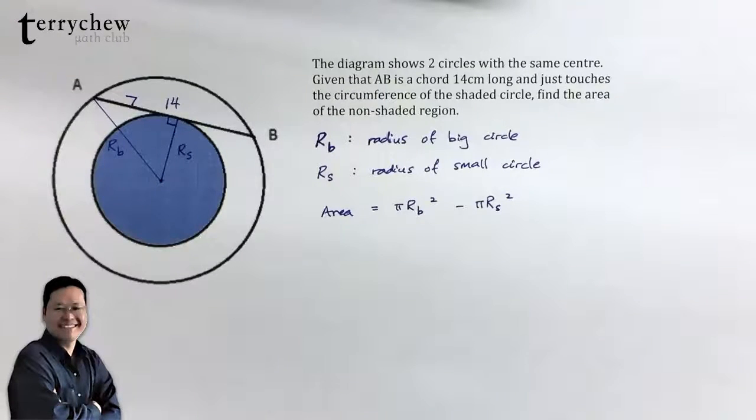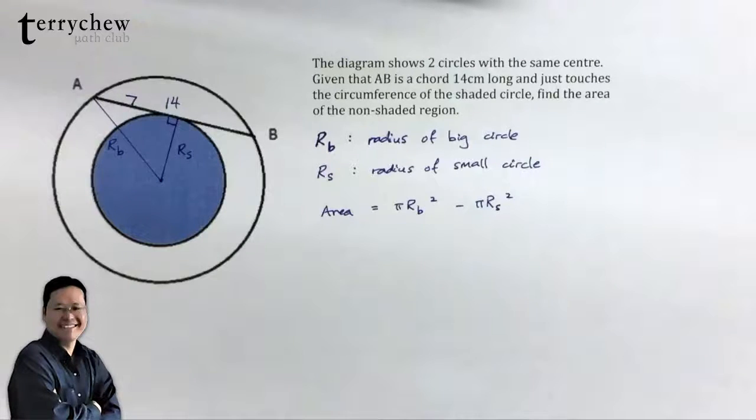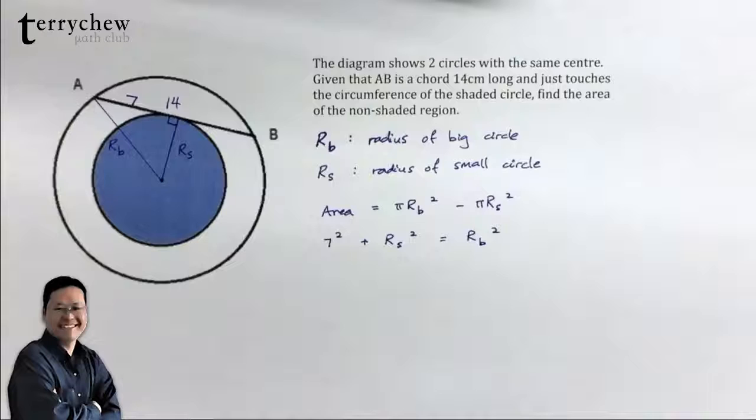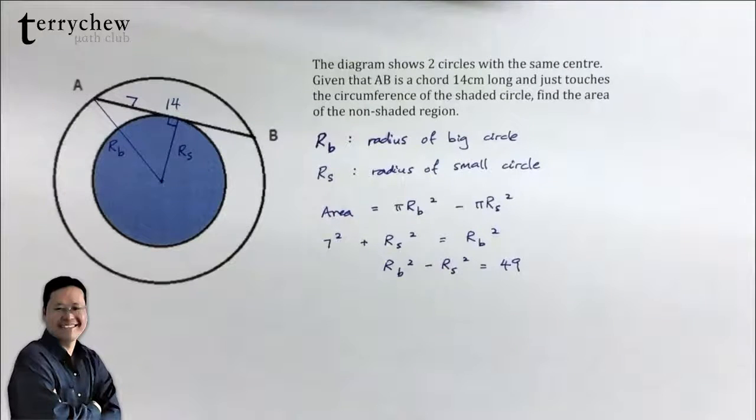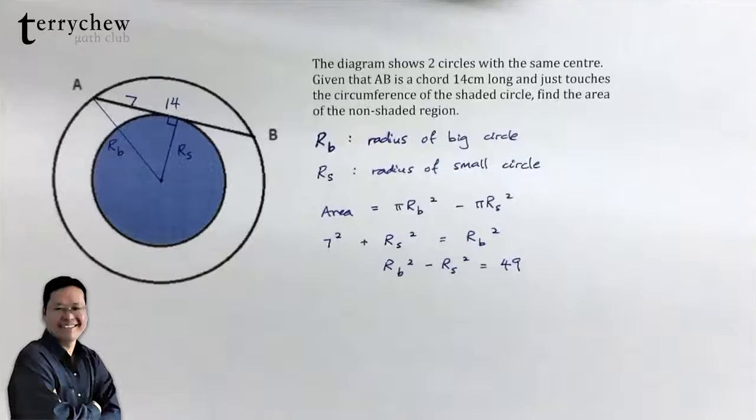So very nice, we have a right triangle, so by Pythagorean theorem we can say that 7 squared plus RS squared equals RB squared. Or rearranging, we have RB squared minus RS squared equals 49.